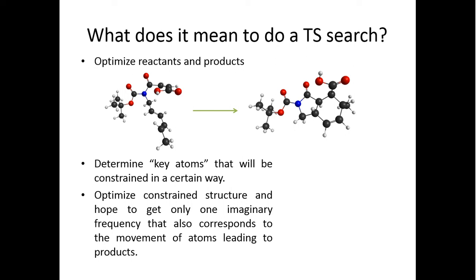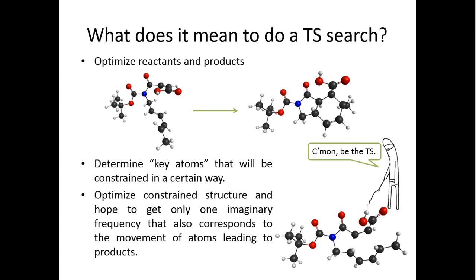When you optimize this constrained structure that you hope would be a transition state, then you have to do a frequency calculation and make sure that the imaginary frequency that you get, you have only one of them, and that it corresponds to the movement. The vibration corresponds to these atoms going from reactants to products. It's a long process if you don't really know where you're going.